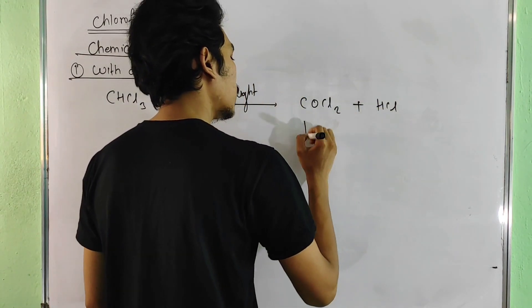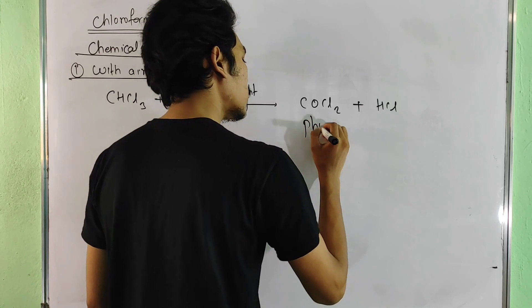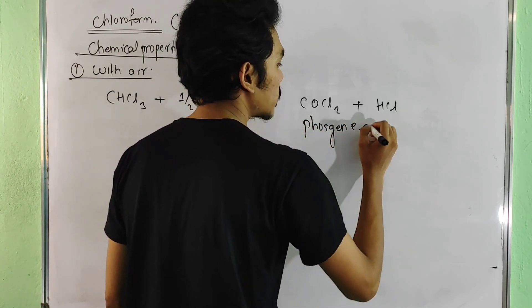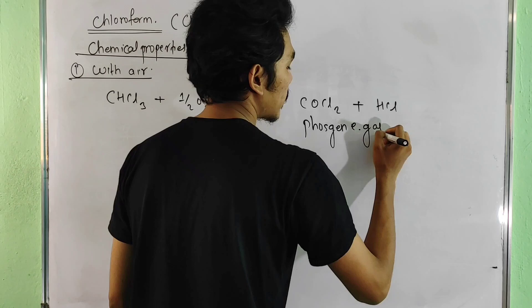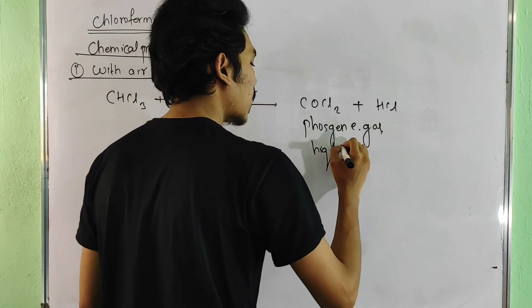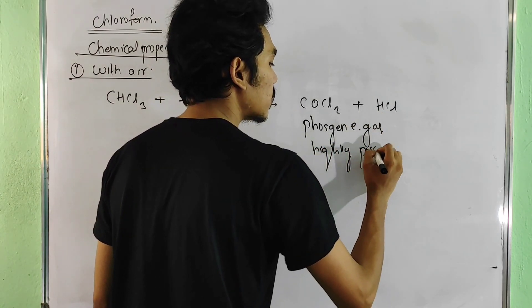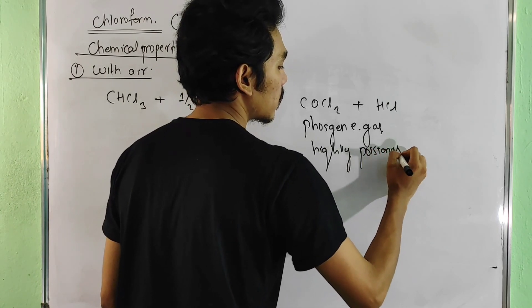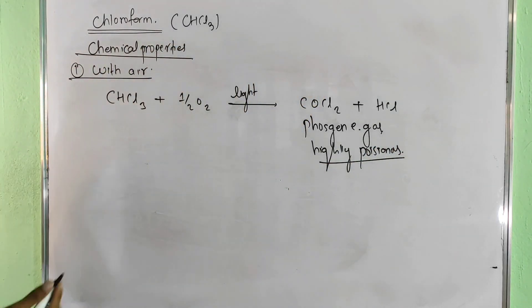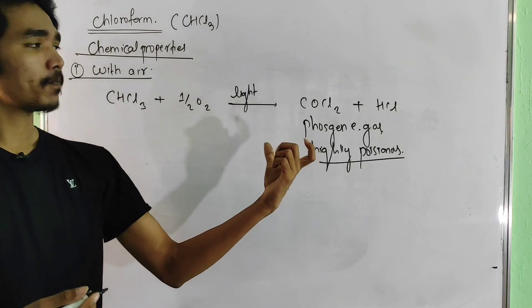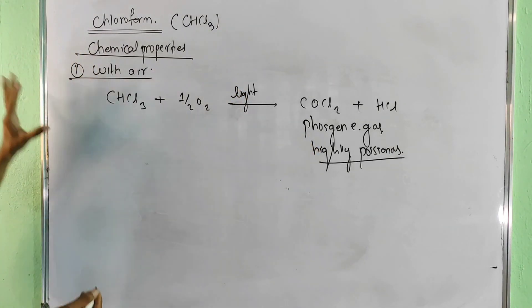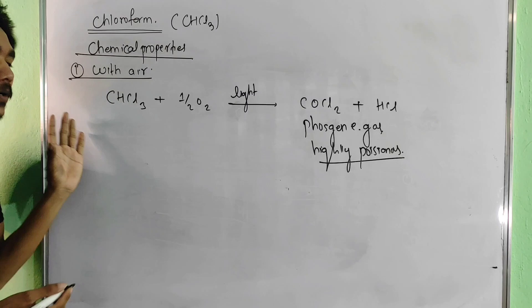The product formed when chloroform reacts with air in the presence of light is phosgene gas. This is highly poisonous — it is a deadly poisonous gas formed in light presence. This is why chloroform must be handled carefully.